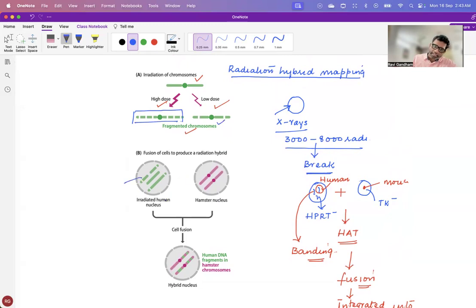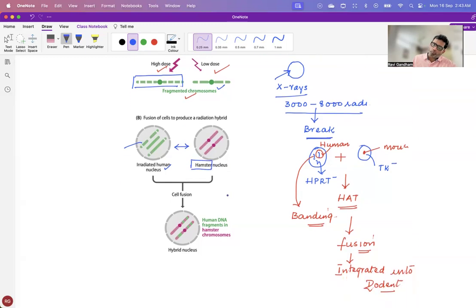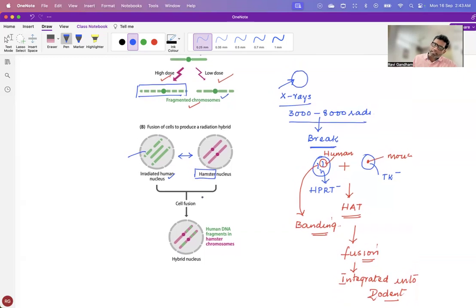We take irradiated human nucleus and then the irradiated hamster. I was talking about rodent. Instead of mice, in this particular diagram, it is shown as hamster, which is a rodent. And after cell fusion and selection, what did I tell you? The ones that are green in color here, they get integrated into the rodent cell line. That's what I've mentioned here.